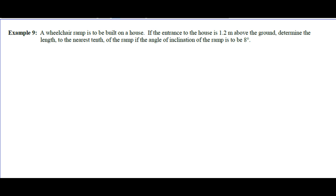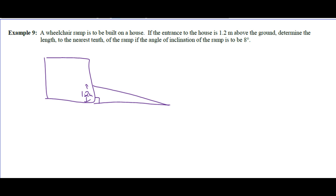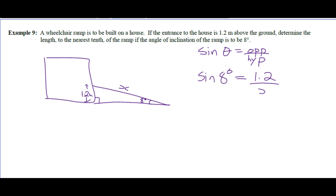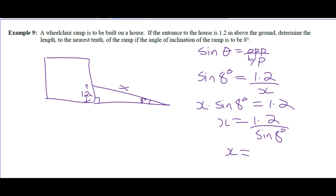A wheelchair ramp is to be built on a house. The entrance is 1.2 meters above the ground. Determine the length of the ramp to the nearest tenth if the angle of inclination is 8 degrees. The house is perpendicular to the ground, so in relation to the 8-degree angle, we have opposite (1.2 m) and hypotenuse (x). Using sine: sin 8° = 1.2 over x, so x = 1.2 divided by sin 8°, which is 8.6 meters.